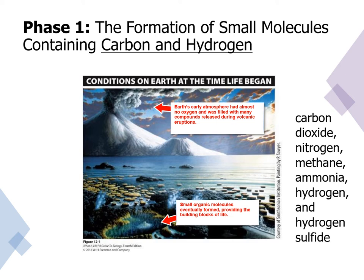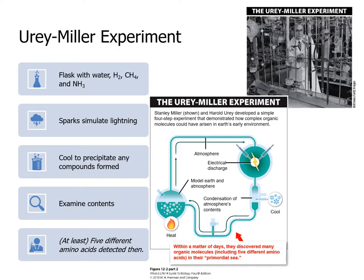Almost all of these gases are present due to volcanoes constantly erupting, and we also see lots of water — lots of oceans — and these nice warm little pools, which Darwin called warm little ponds, which is where life, or at least the building blocks of life, would have started. To test this theory, Urey and Miller in 1953 composed an experiment where, in a flask, they put water, dihydrogen, methane, and ammonia, then applied an electrical discharge. They let it cool to precipitate any compounds that could be formed, and at least five different amino acids were detected.